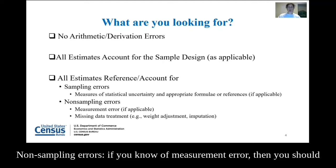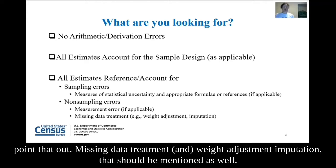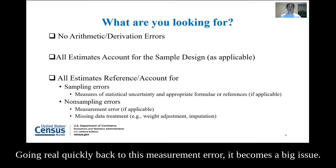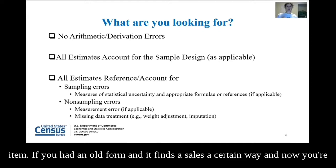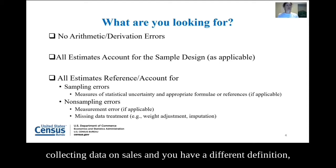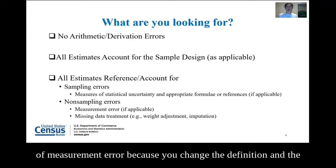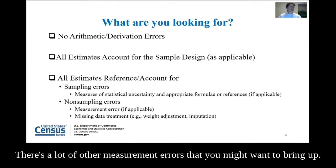Non-sampling errors: if you know of measurement error, you should point that out. Missing data treatment, weight adjustments, and imputation should be mentioned as well. Measurement error becomes a big issue if you change the way you're collecting a particular item. If you had an old form that defines sales a certain way, and now you're collecting data on sales with a different definition, there's got to be a reason for that, and there will be some source of measurement error because you've changed the definition and the respondent may or may not know that.